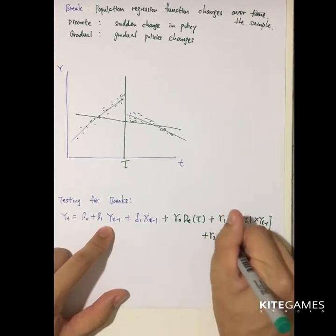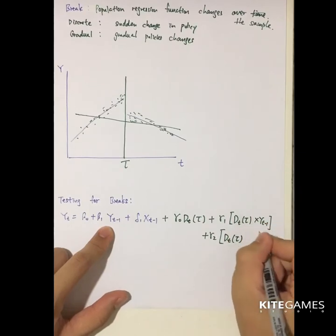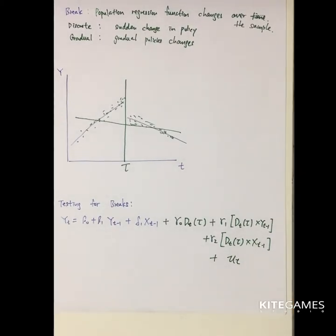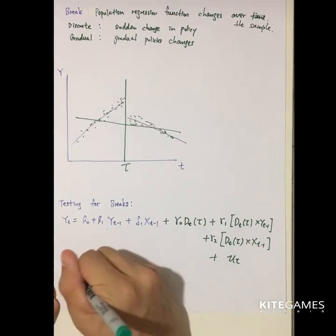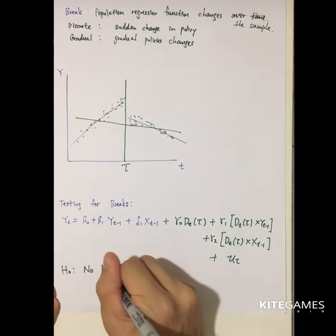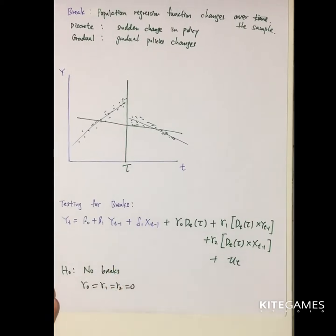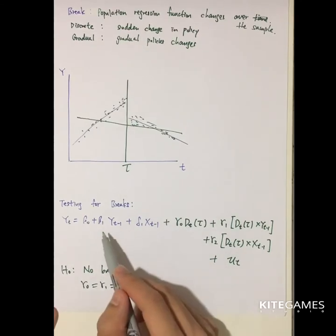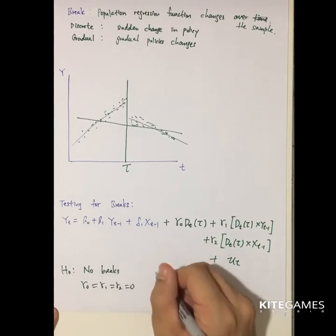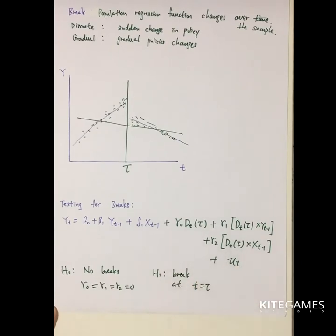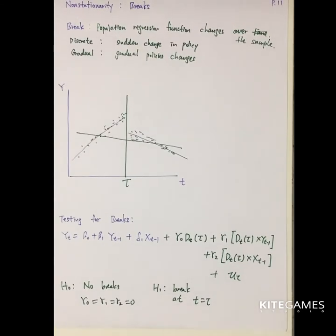You also add gamma_2 times the dummy variable D(tau) times X_{t-1}, plus the error term. The null hypothesis is that there are no breaks, meaning gamma_0 equals gamma_1 equals gamma_2 equals 0. If they equal zero, there is no need to change your regression model. The alternative hypothesis is that there is a break at t equal to tau. You then use the usual F-test to test for the break.